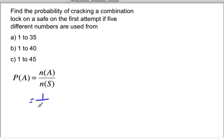And the total number of ways that you can choose five numbers out of the 35 is the permutation of 35 choose 5.